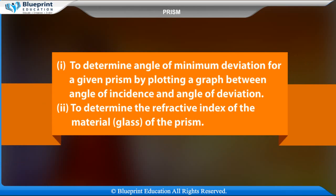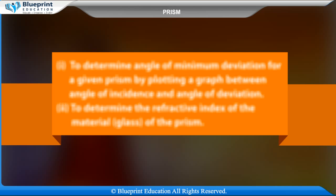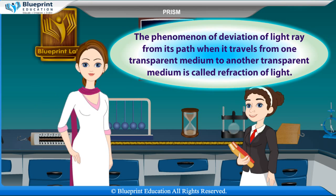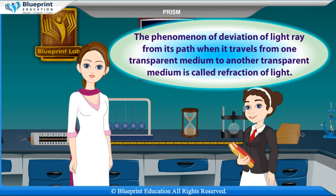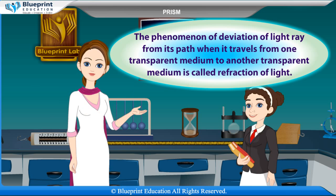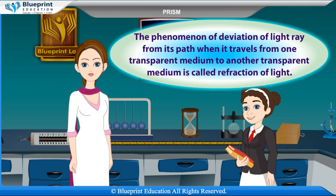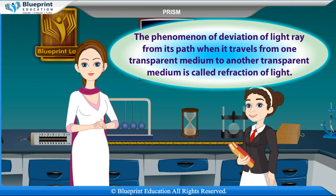To determine the angle of minimum deviation for a given prism by plotting a graph between angle of incidence and angle of deviation, and to determine the refractive index of the material (glass) of the prism. The phenomenon of deviation of a light ray from its path when it travels from one transparent medium to another is called refraction of light.